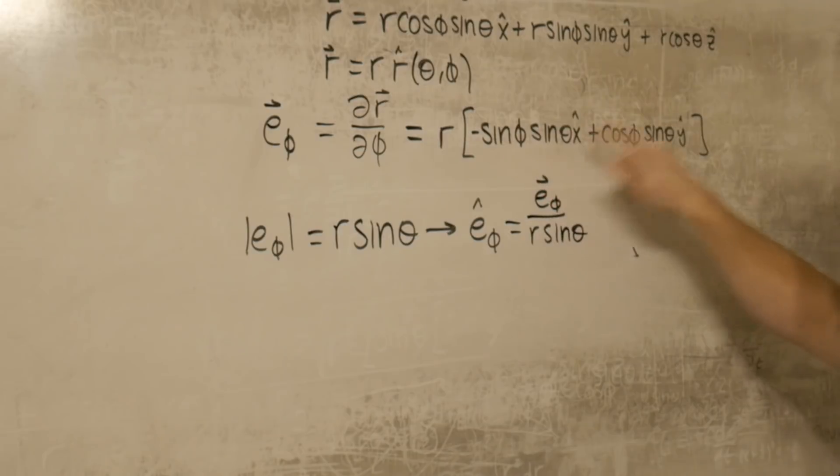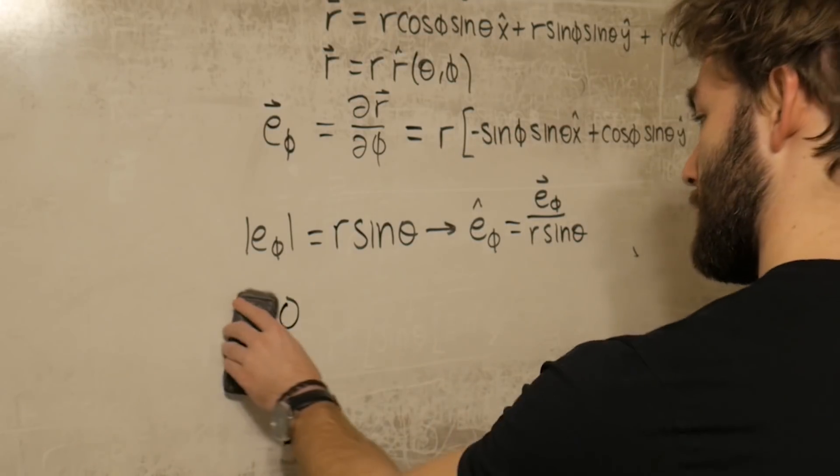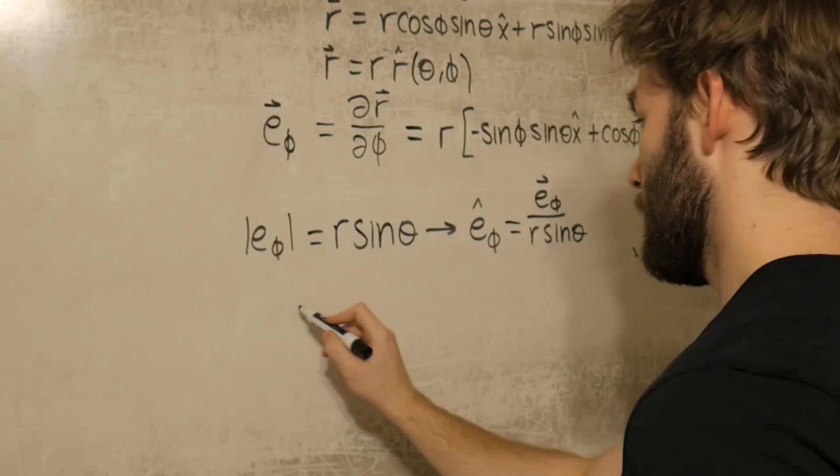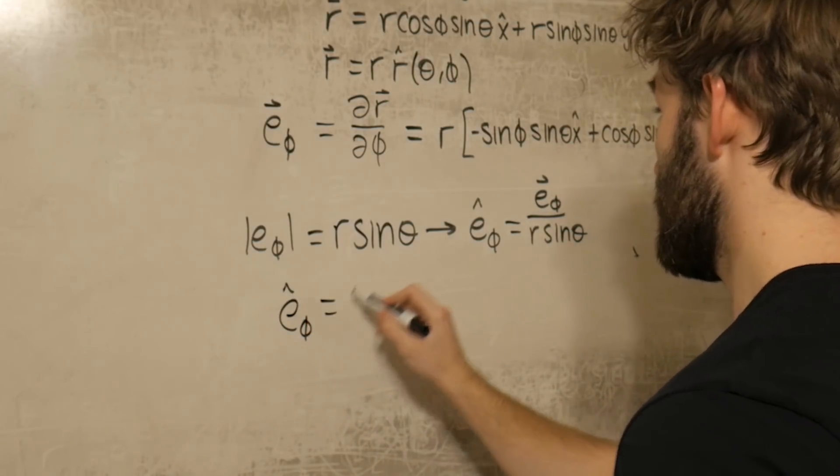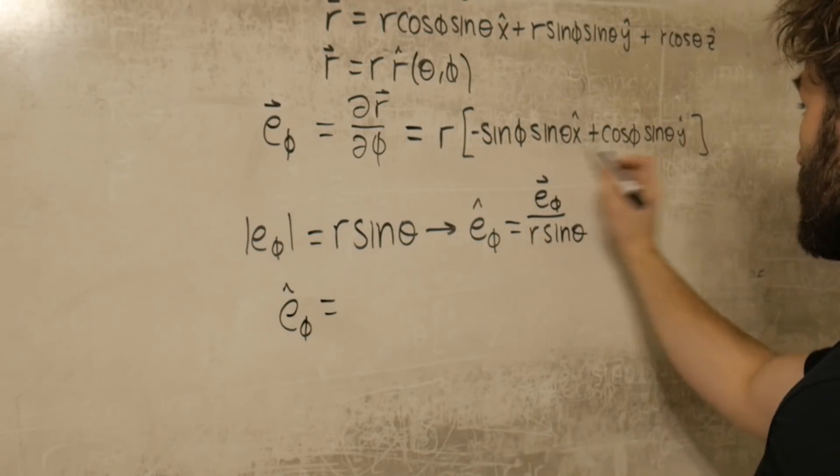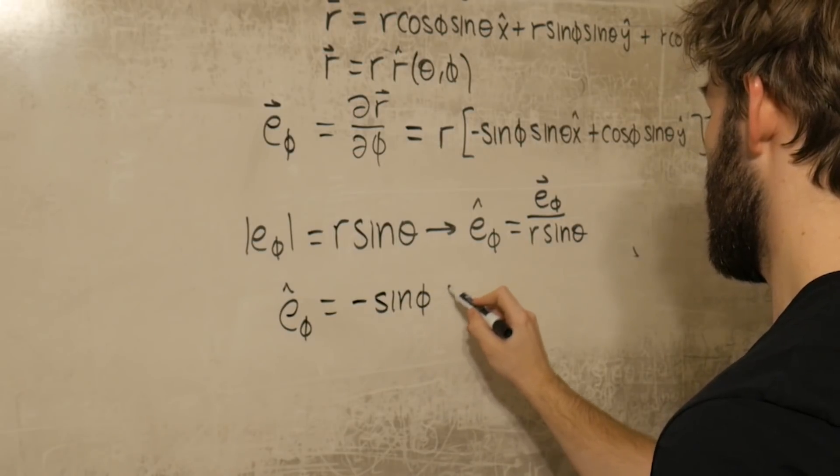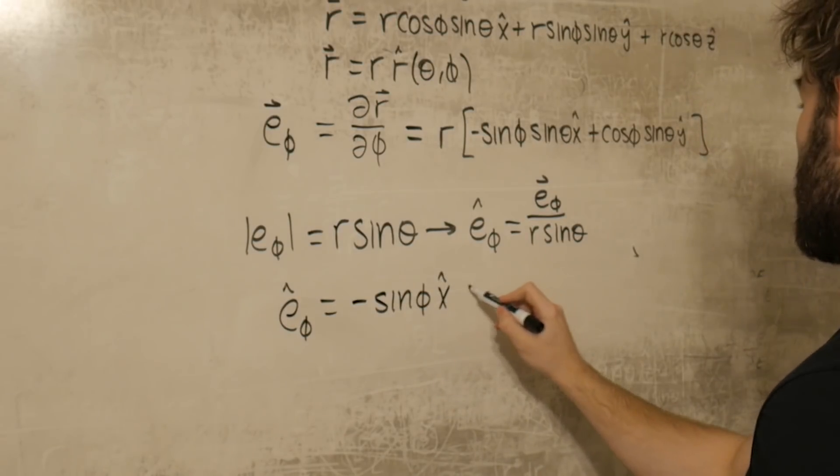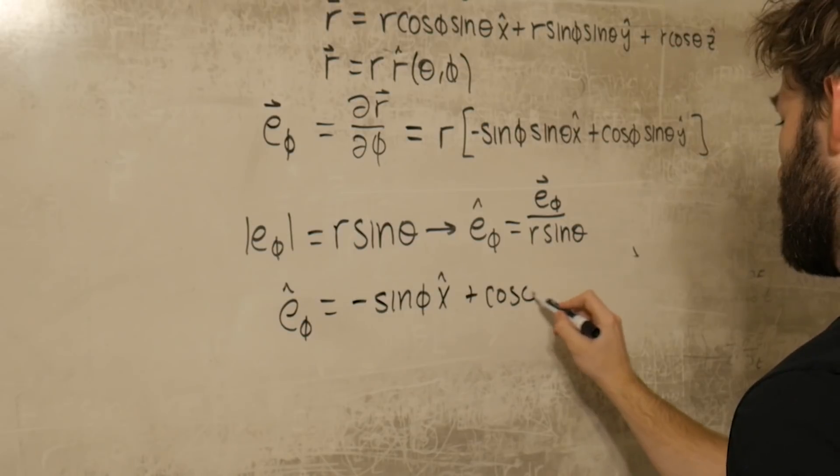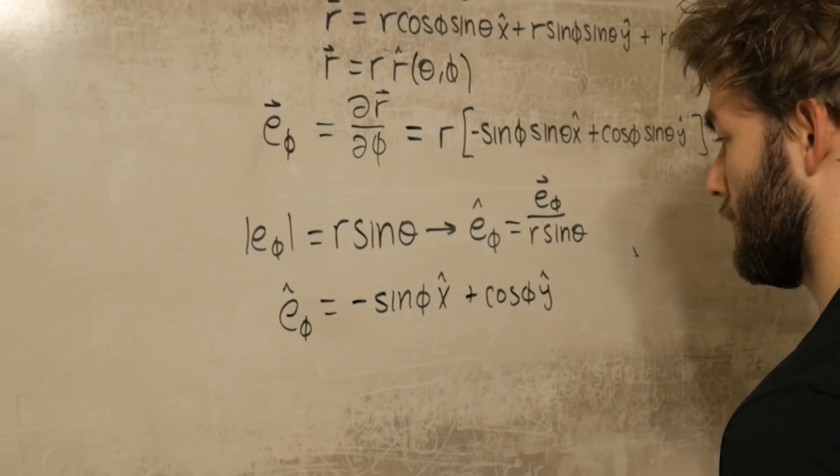We have a sine theta in both of these terms, so they're going to cancel out as well as with the r. e phi is equal, again the r cancels with the r, the theta cancels with the theta, so this should be equal to minus sine phi x hat plus cosine phi y hat. Perfect. And there we have the three unit vectors for spherical coordinates.